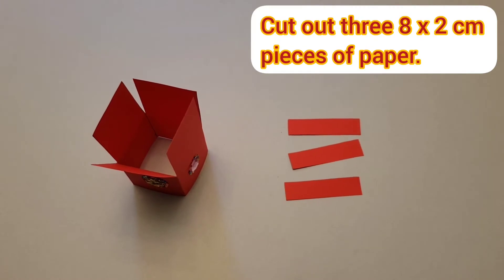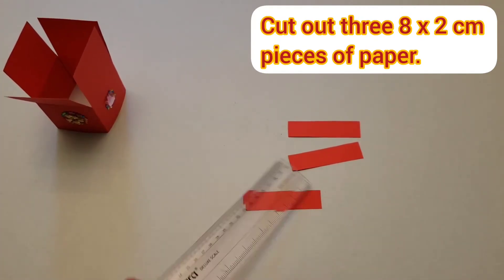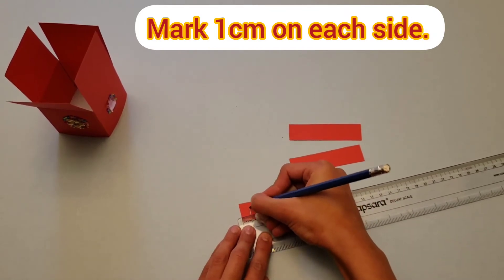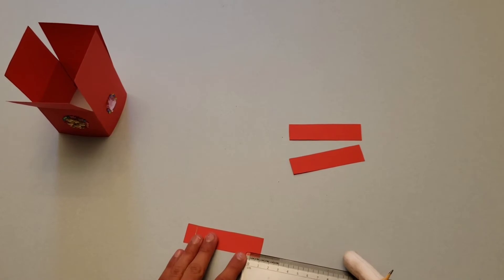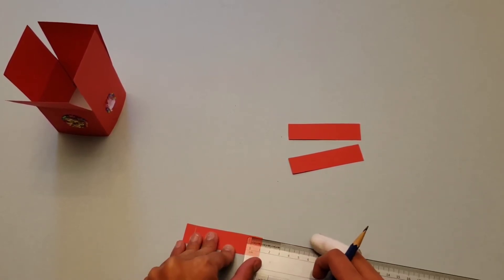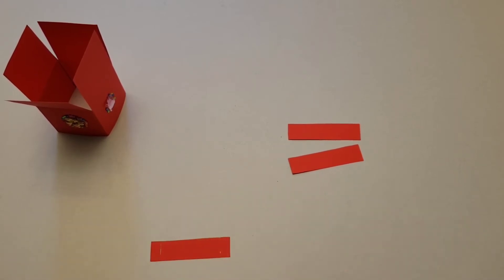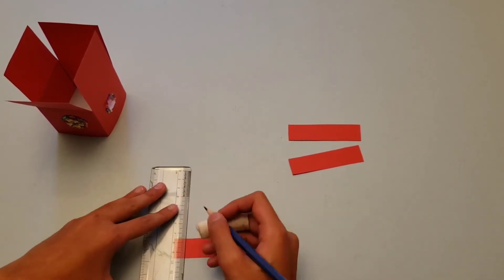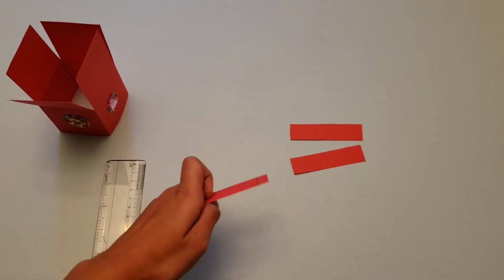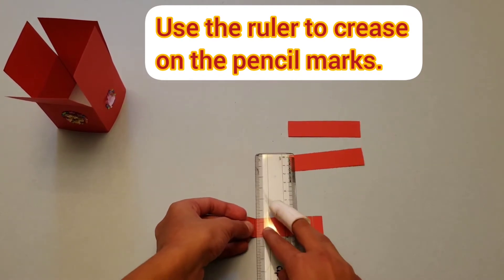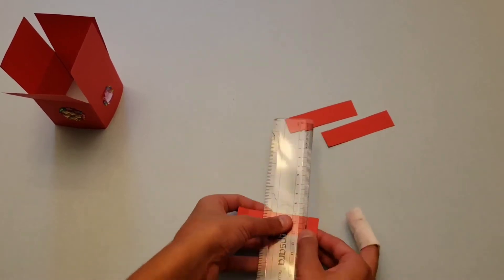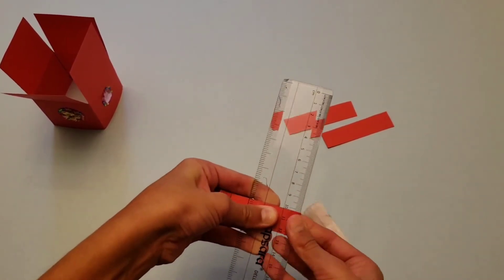Now you'll need three 8 by 2 centimeters strips of papers. Mark 1 centimeter on each side, and using your ruler, crease on the pencil lines as before. And repeat on the other two.